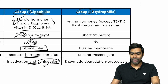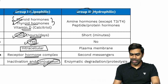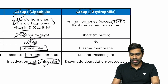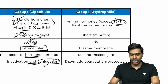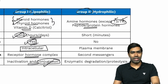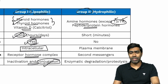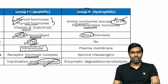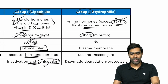Group 2 hormones are hydrophilic — water-soluble. Most are amine-based hormones; the only exception is T3 and T4 (triiodothyronine and thyroxine). Many peptide and protein-based hormones — like parathyroid hormone, insulin, and glucagon — are also classified as hydrophilic hormones.